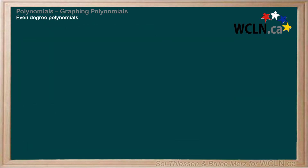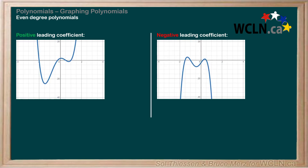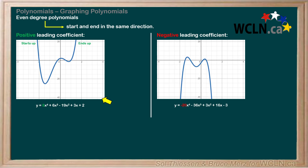Let's move on to even degree polynomials. Again, we'll look at two examples: one with a positive leading coefficient and one with a negative leading coefficient. Here are the graphs and the corresponding equations. Both of our example functions are quartic. Note that even degree polynomials start and end in the same direction. If an even degree polynomial starts up, it ends up — like the example with the positive leading coefficient. If one starts down, it ends down — like the example with the negative leading coefficient.